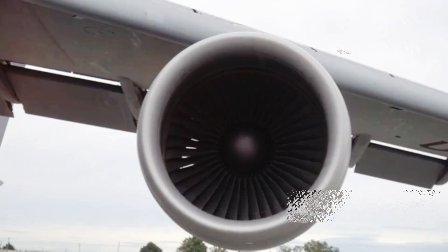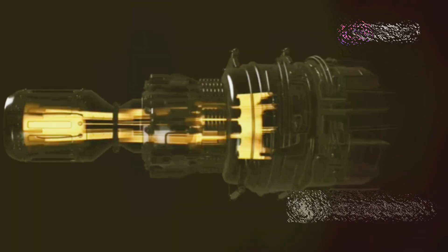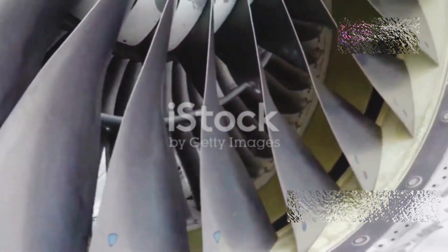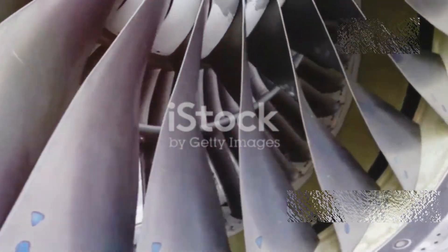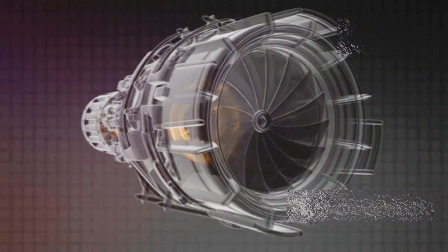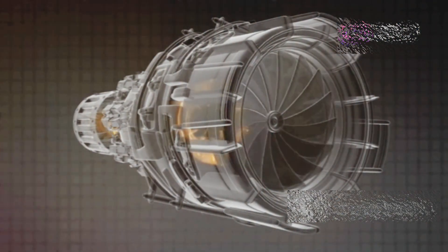Okay, so we've got all this air inside the engine, but now what? This is where things start to heat up, literally. The air enters a section called the compressor, which is basically a series of spinning blades attached to a shaft. Think of it like a high-speed fan, but instead of pushing the air away, it squeezes it together, making it denser and hotter.